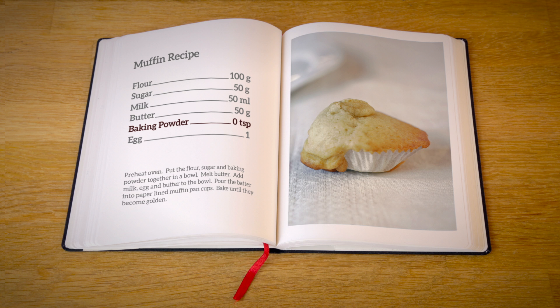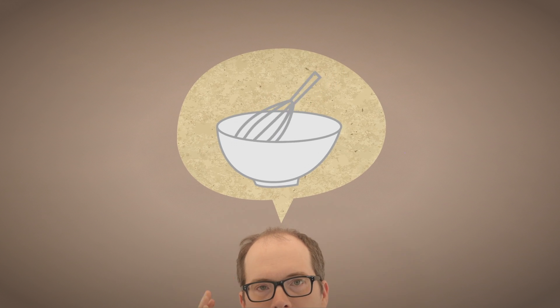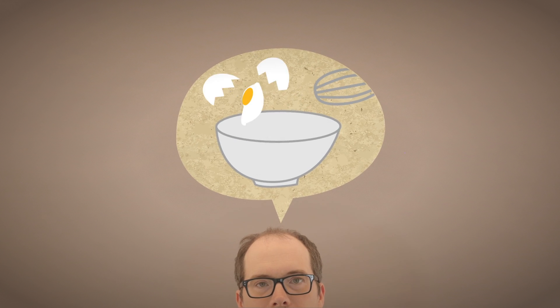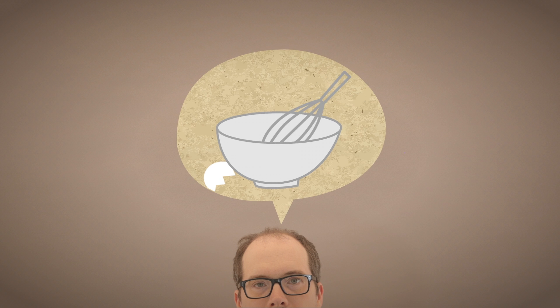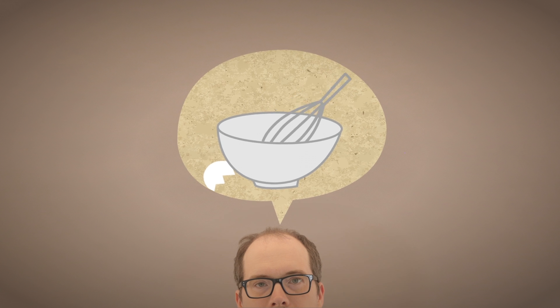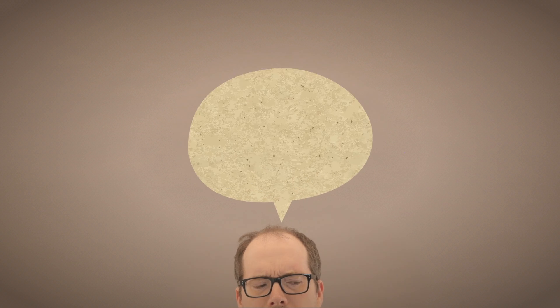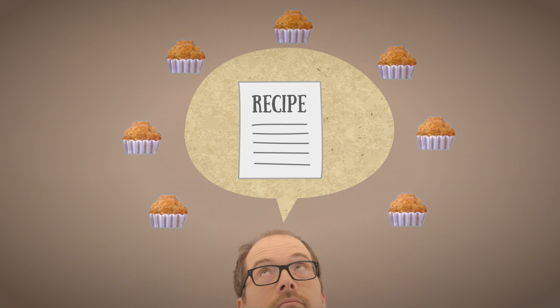Algorithmic design for buildings works exactly the same way. In order to get to the best design, you need to experiment with the parameters. Traditionally, you would do this process in your head. With algorithmic design, in order to get to the best design solution, you simply create the process or recipe, and not the final outcome.